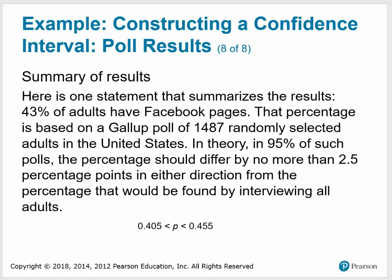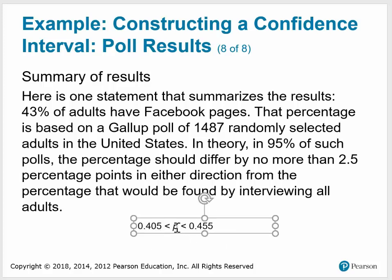Here's a statement that summarizes the results: 43% of adults have Facebook pages. That percentage is based on a Gallup poll of 1,487 randomly selected adults in the United States. In theory, in 95% of such polls, the percentage should differ by no more than 2.5 percentage points in either direction from the percentage that would be found by interviewing all adults. That's based on the interval we found — 0.405 to 0.455 — which is within 2.5 percentage points from the 43% sample proportion.